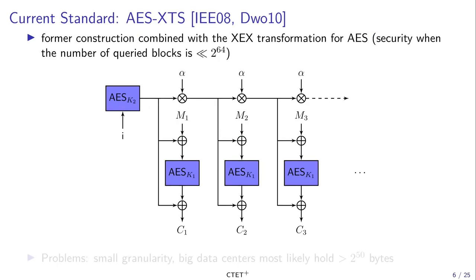The current standard for disk encryption, which is AES-XTS, uses this construction combined with the XEX transformation applied to AES. Note that XEX has security up to the birthday bound, which means the construction is secure as long as the number of queried blocks is small in front of 2 to the 64. AES-XTS uses two AES keys, K1 and K2. To encrypt the J-th block in the I-th sector, you first encrypt I using key K2, get a mask that you multiply by alpha to the power J, where alpha is the primitive element of GF(2^N). This new mask is XORed to the plaintext MJ.